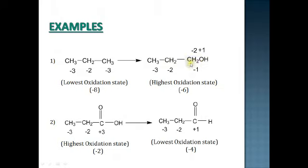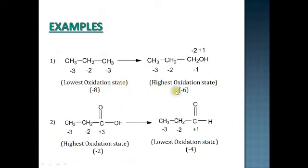In 1-propanol, the central carbon oxidation state is 0 from carbon-carbon bonds, minus 2 from two hydrogen bonds, giving minus 2. The terminal carbon attached to oxygen has one oxygen bond (plus 1) and two hydrogen bonds (minus 2), and one carbon bond (zero), giving an oxidation state of minus 1. Thus the reactant carbon has a higher oxidation state and the product has a lower, confirming oxidation — this corresponds to removal of electrons.